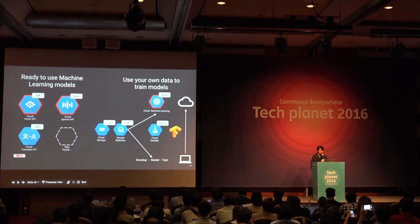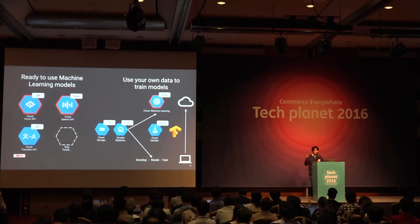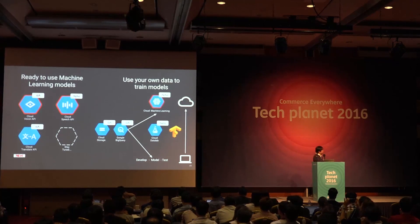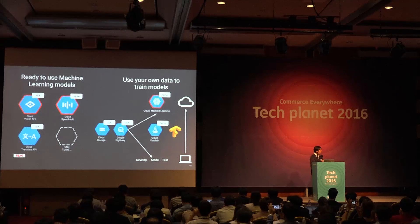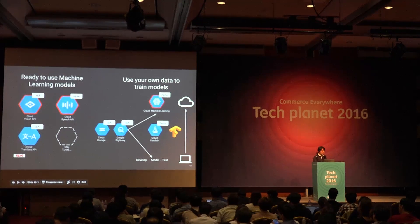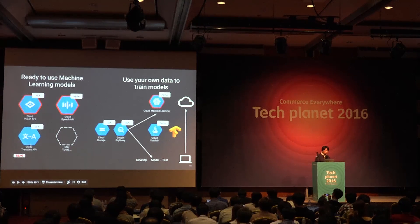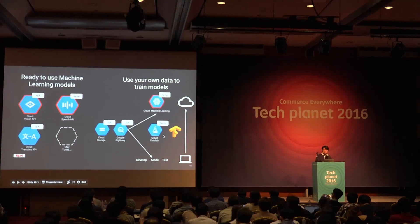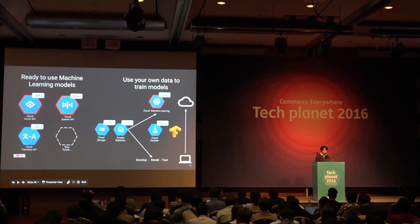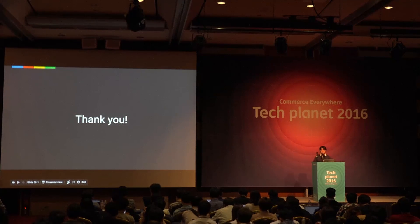So that was how Cloud ML has been used by Japanese customers. As a wrap-up, there are two kinds of products: ML APIs, which require no machine learning expertise — just send your image, audio, or natural language to the API and get results in a few seconds — and TensorFlow-based open source products where uploading your TensorFlow model to the Cloud can accelerate training 10 to 100 times faster. Thank you so much.